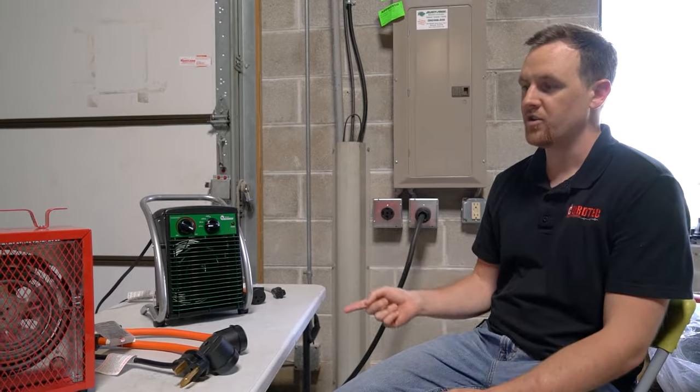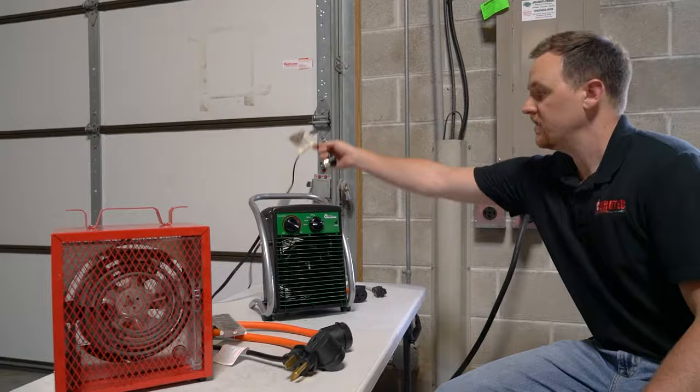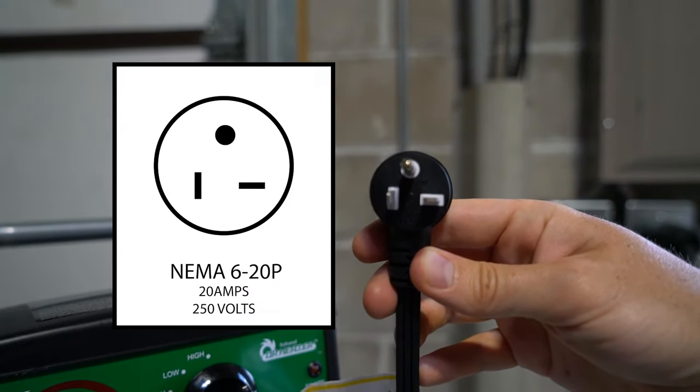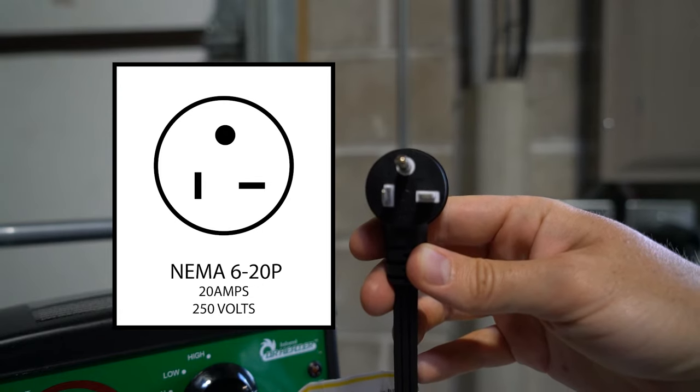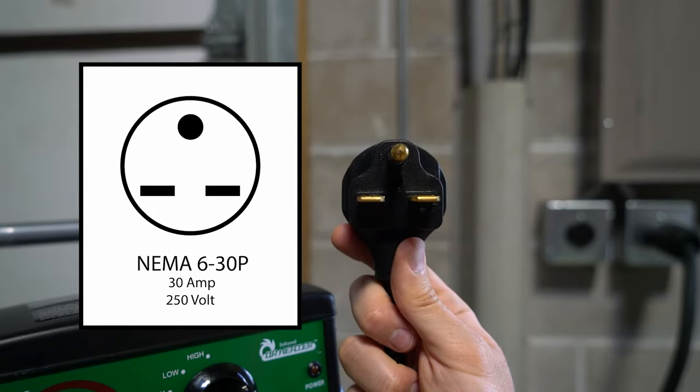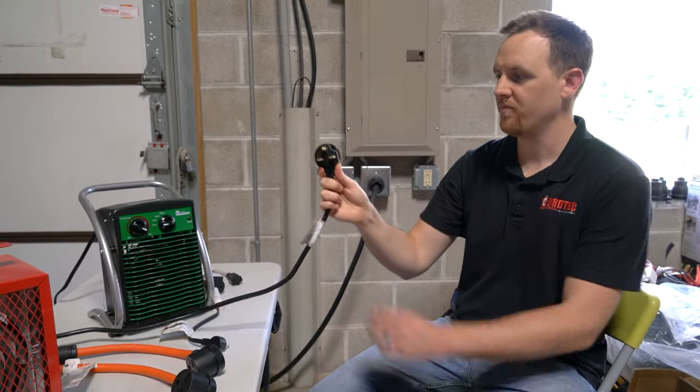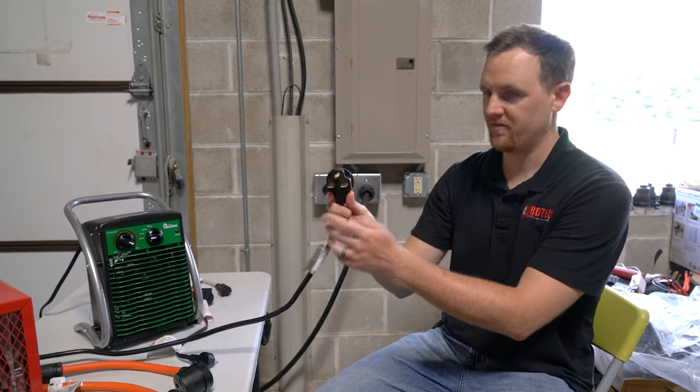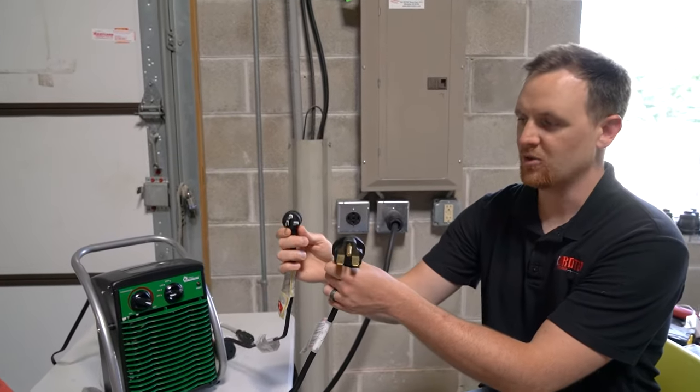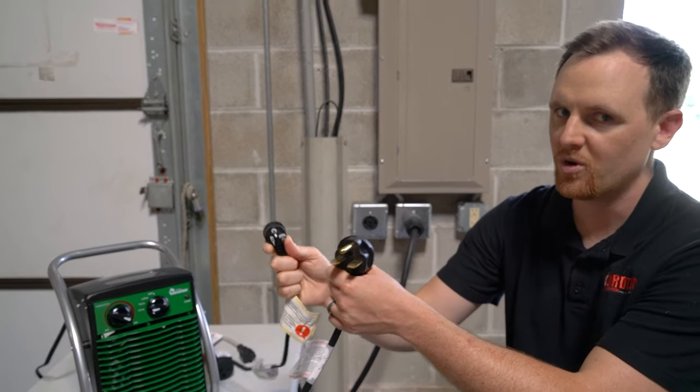Here we have two portable heaters that are strictly wired for only 220 volt usage. Over here, NEMA 6-20 and NEMA 6-30 and these are both wired specifically for 220 volt usage. So two hots and a ground and it's the exact same way for the 6-20, two hots and a ground. So it's only going to be able to be used at 220 volts and it needs a 220 volt outlet.